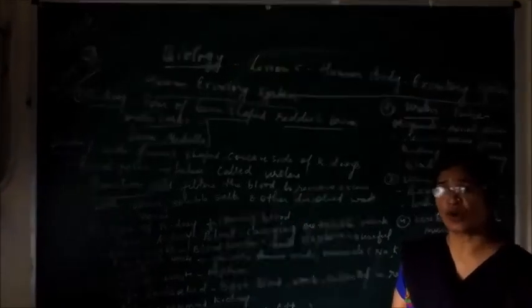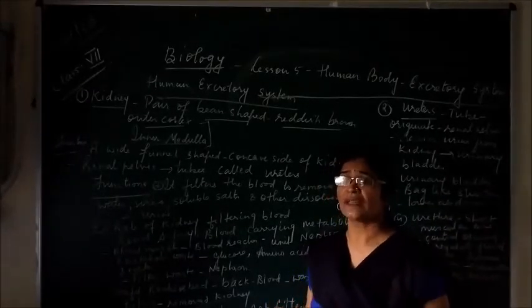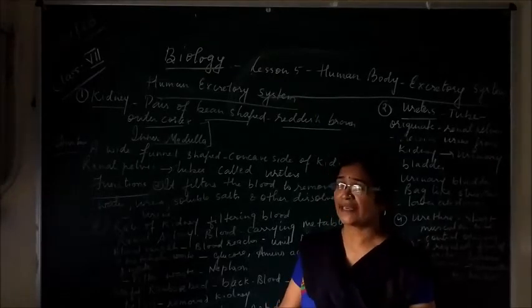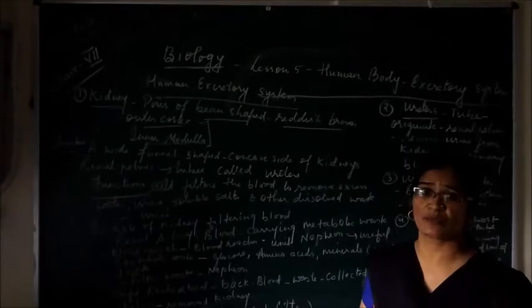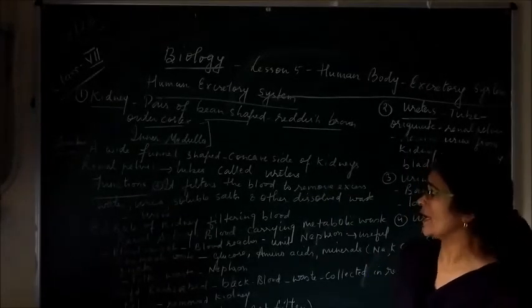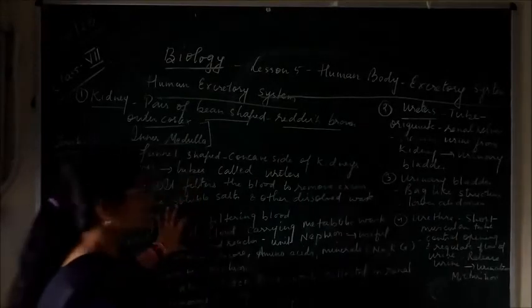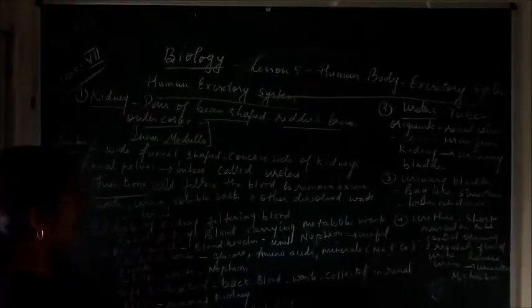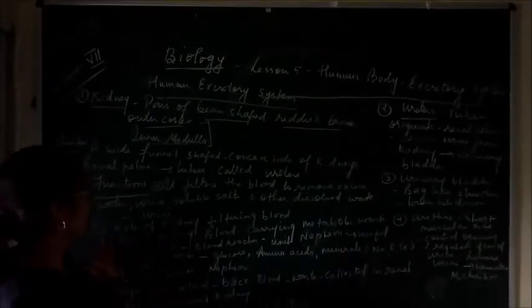The kidney has millions of smallest units called nephrons. The kidney is made up of millions of smaller units called nephrons, and the main function of the nephron is that it filters and purifies the blood and separates waste substances from useful substances.